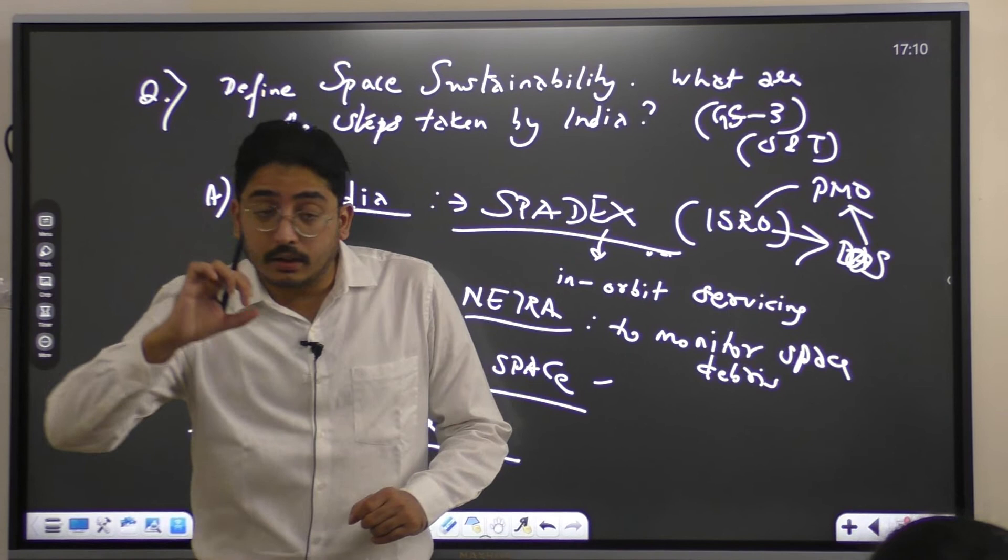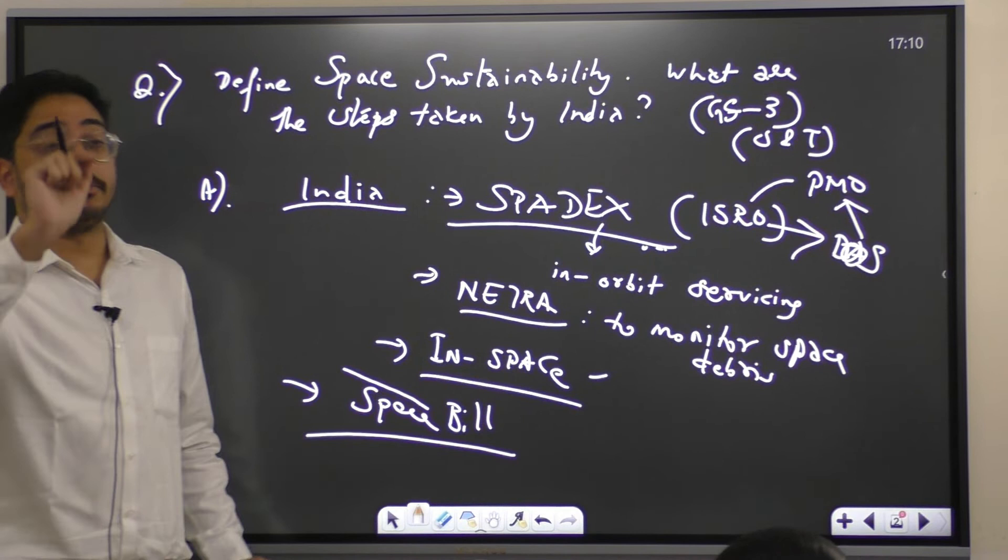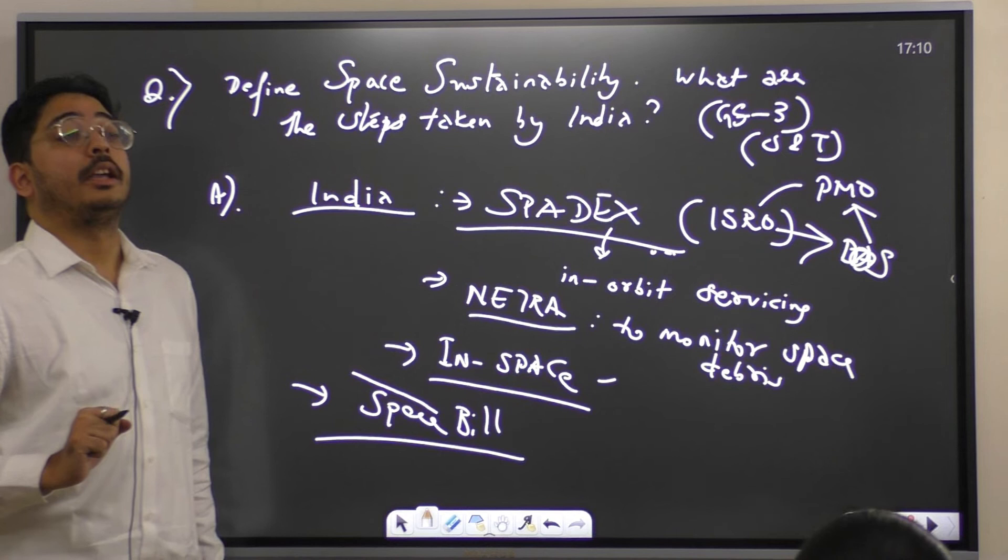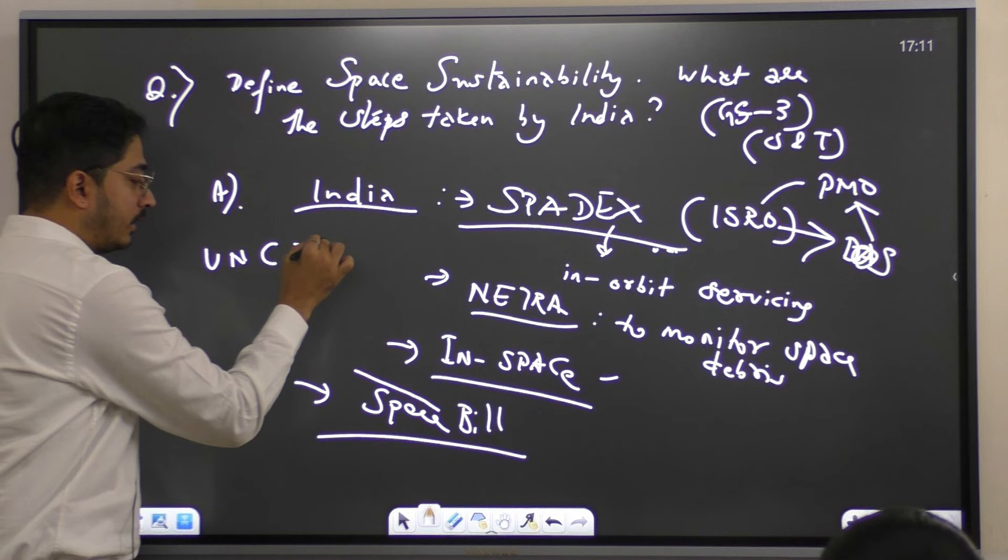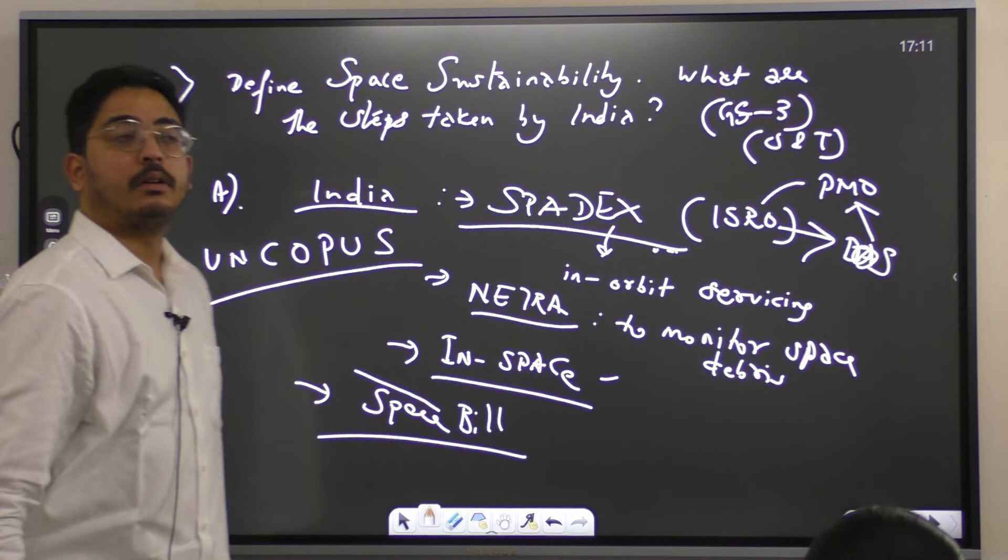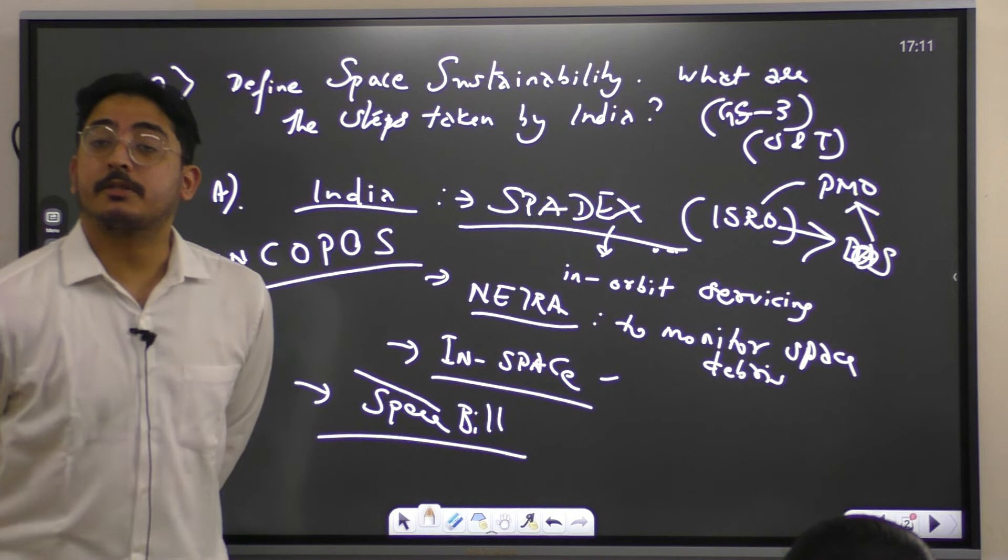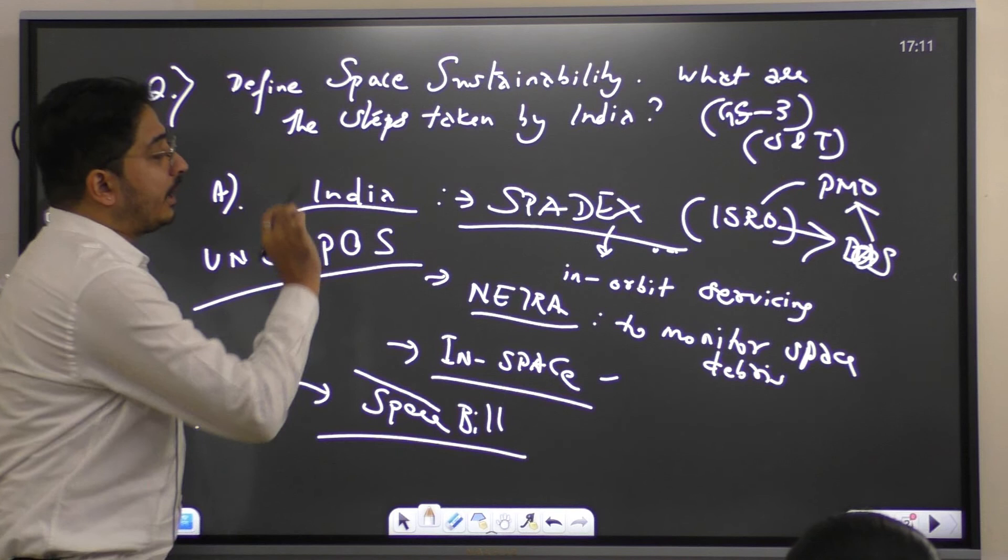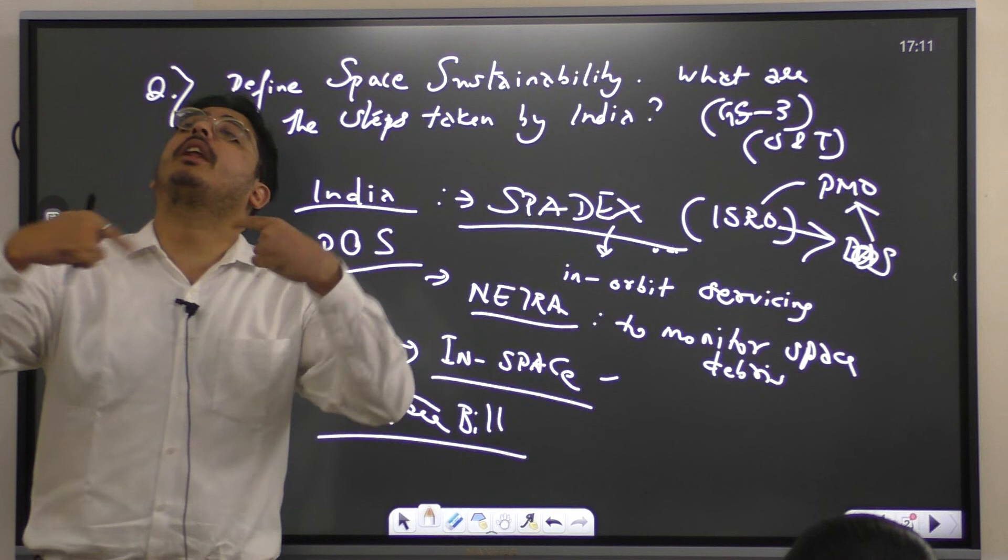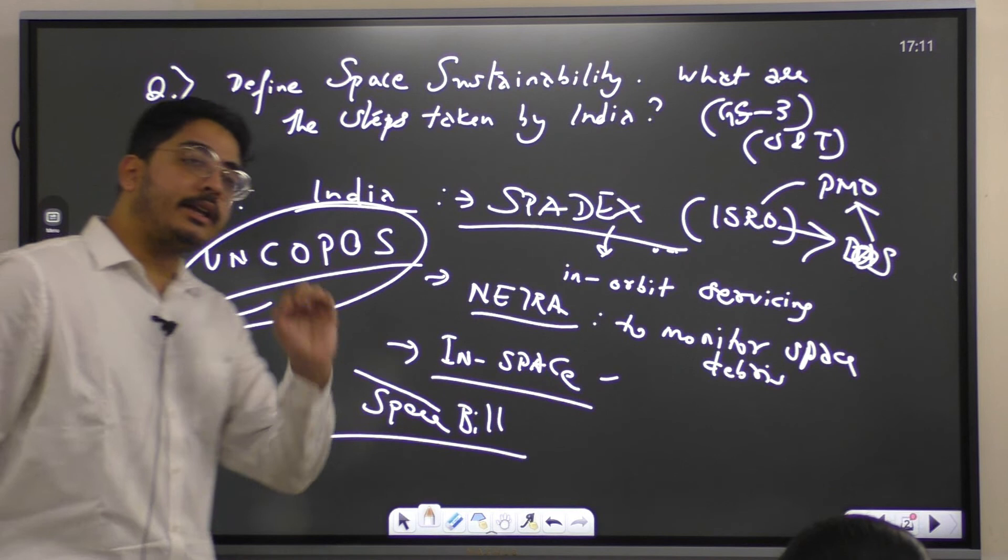Now United Nations. In conclusion we have to write about United Nations. UN committee. What is the name? United Nations Committee on use of outer space. Now in conclusion what I will write: I am giving the meaning, I am giving the steps taken by India. Now I am giving world level what can be done. For that you need to know this world level organization.